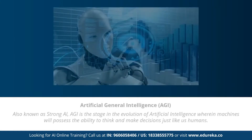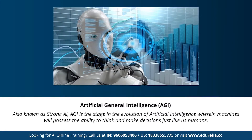Next we have artificial general intelligence, also known as strong AI. This stage is the evolution of AI wherein machines will possess the ability to think and make decisions just like human beings. There are currently no existing examples of strong AI, but it's believed we will soon create machines as smart as humans. Strong AI is considered a threat to human existence by many scientists — Stephen Hawking quoted that the development of full artificial intelligence could spell the end of the human race.